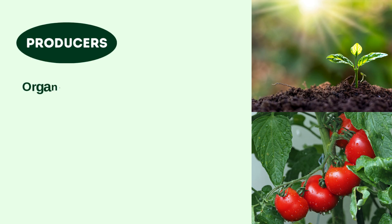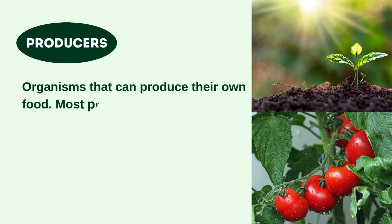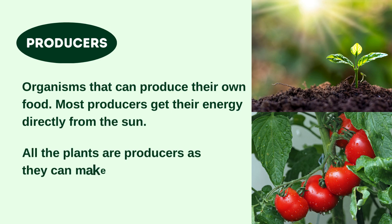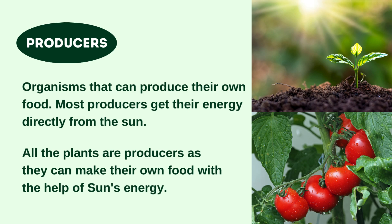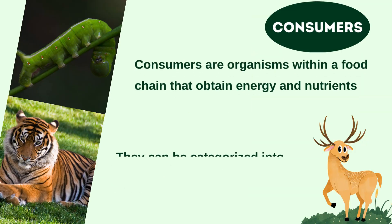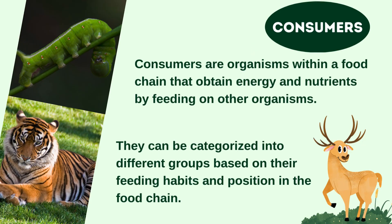Producers are organisms that can produce their own food. Most producers get their energy directly from the sun. All plants are producers as they can make their own food with the help of the sun's energy.